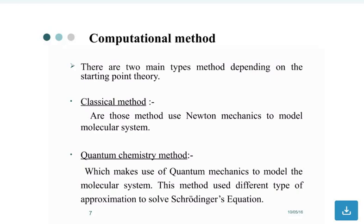There are two main types of methods depending on the starting point theory: classical methods and quantum chemistry methods. Classical methods use Newtonian mechanics to model molecular systems. Quantum chemistry methods make use of quantum mechanics to model the molecular system and use different types of approximations to solve Schrödinger equations.